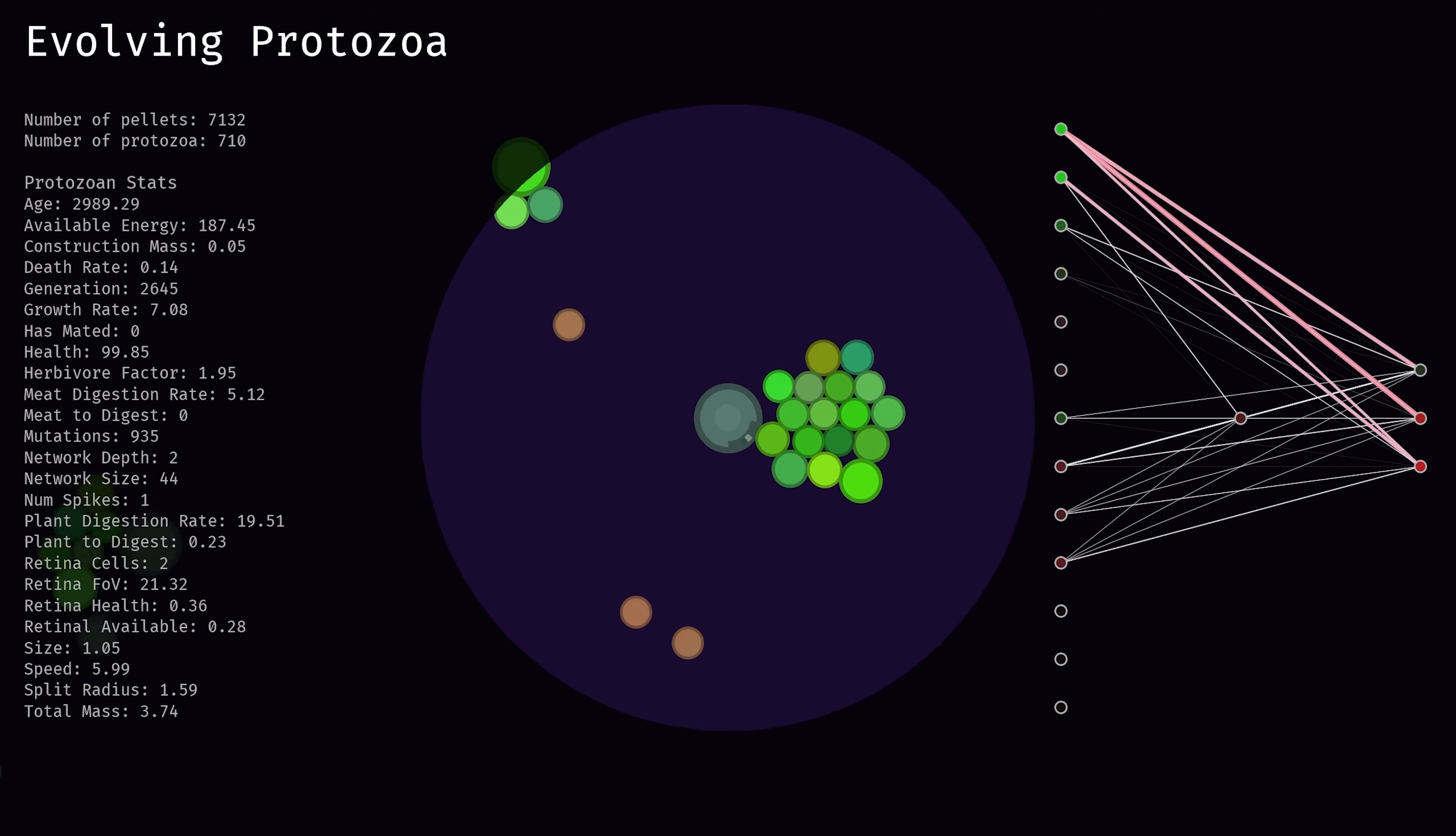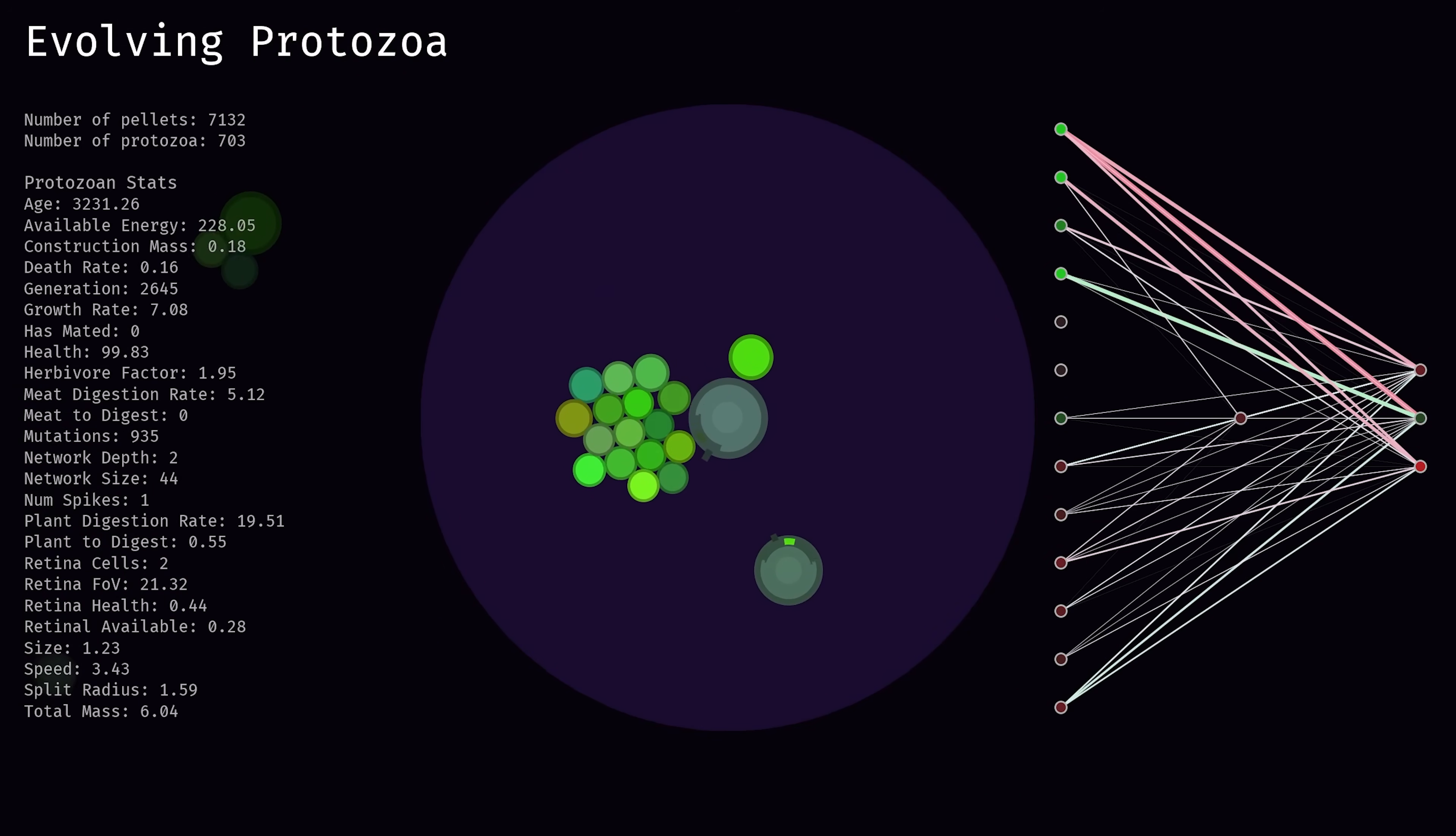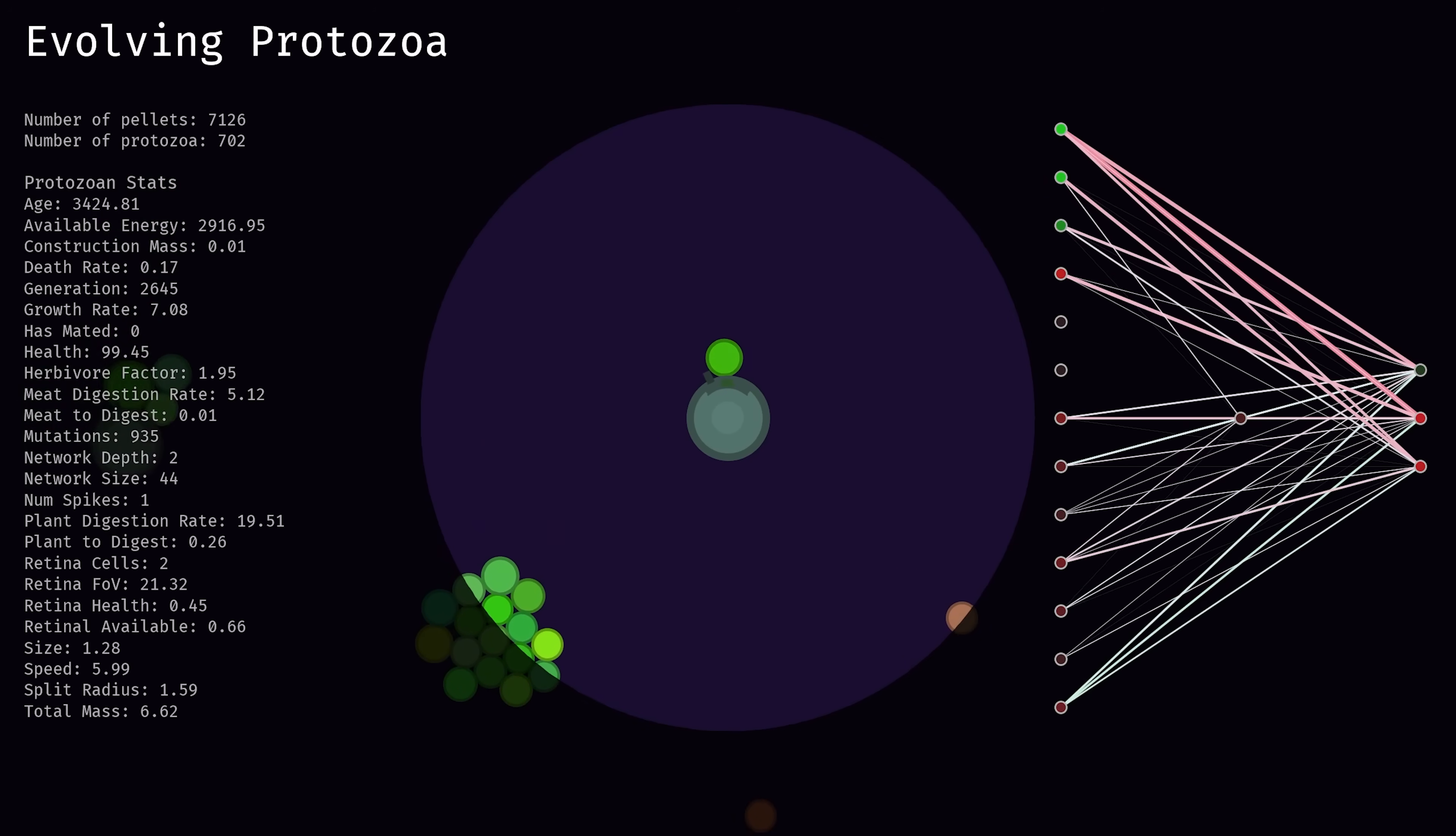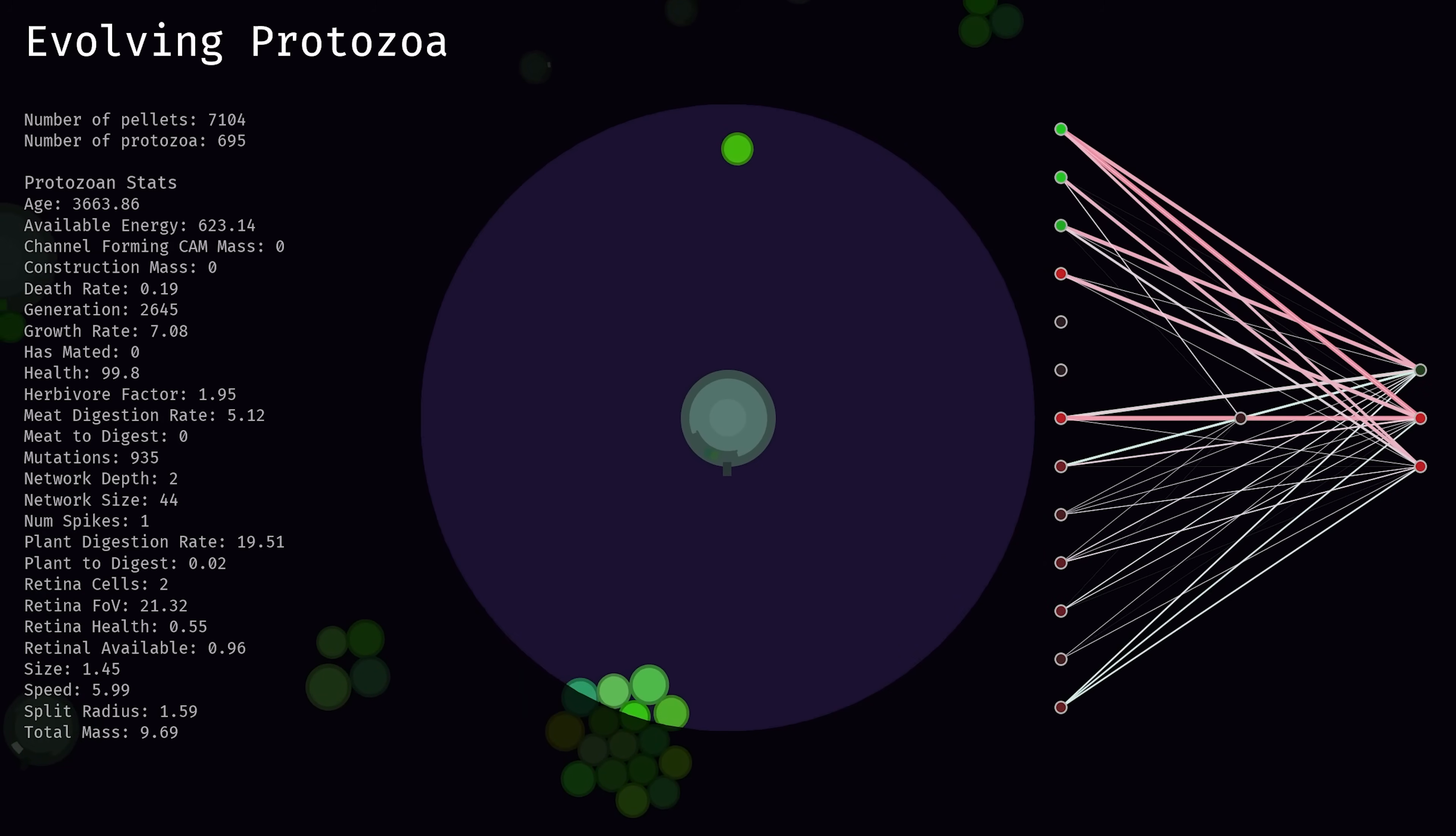Starting out with the basics, there are two key morphological traits that the protozoa can evolve to help them survive. Firstly, they can grow spikes that extrude from their surface and damage other cells that they come into contact with. Secondly, they can develop a light sensitive retina that can help them navigate by facilitating vision.